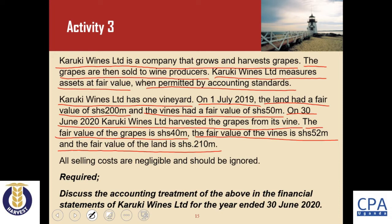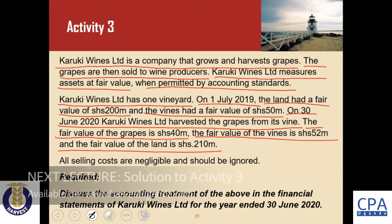We are required to discuss the accounting treatment in the financial statements for the year ended 30 June 2020. For the solution, go to our lecture platform, download the lecture video, and work through the question to test your skill in accounting for biological assets and agricultural produce in the financial statements of an entity.